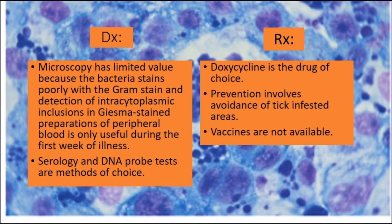For laboratory diagnosis, microscopy has limited value because the bacteria stain poorly on the gram stain, and detection of intracytoplasmic inclusions from stained preparations of peripheral blood is only useful during the first week of illness. Serology and DNA probes are the methods of choice. Treatment uses doxycycline as the drug of choice. Prevention involves avoidance of tick-infested areas, and as of now there are no vaccines available.